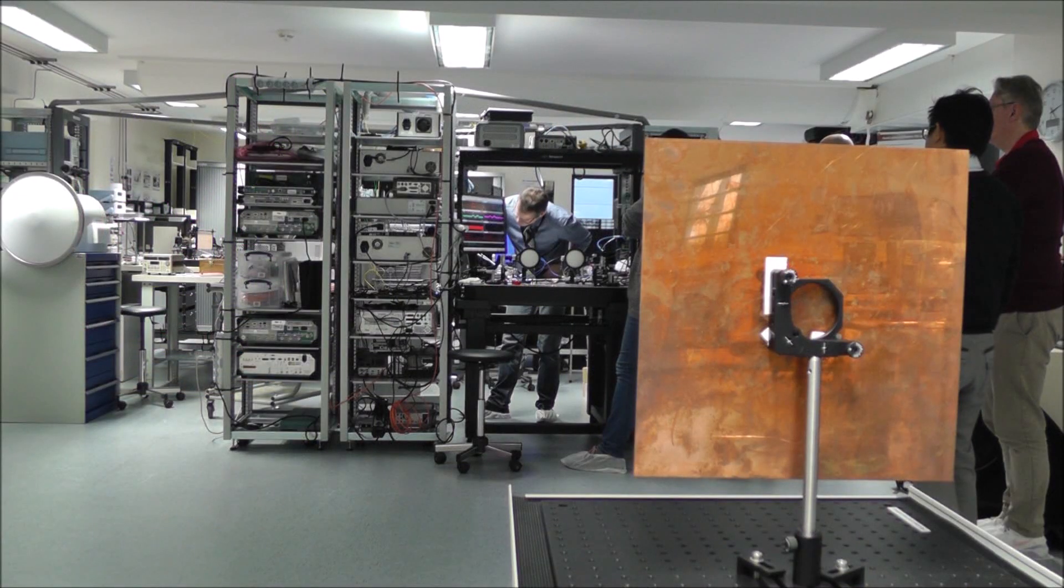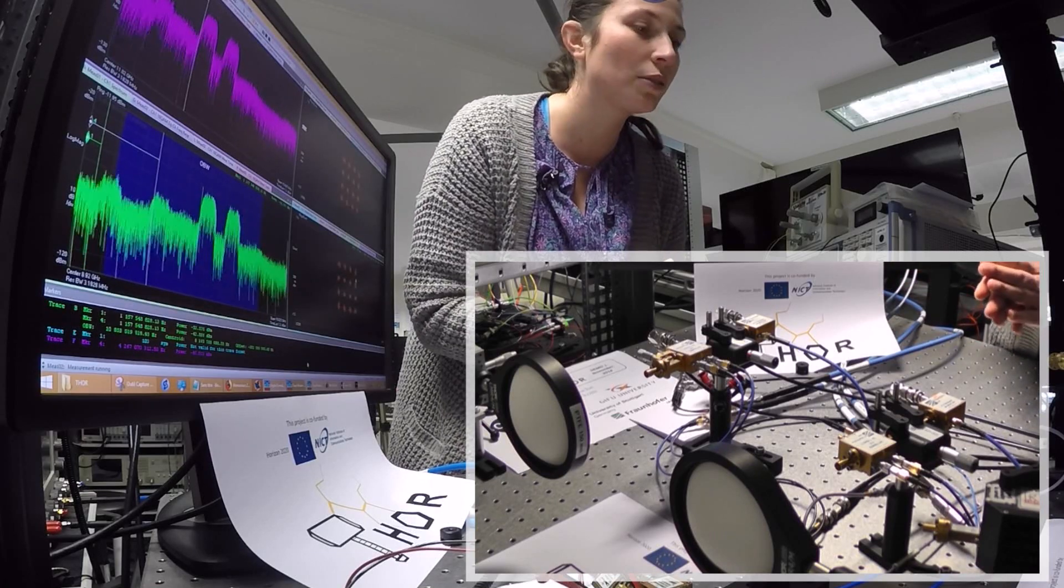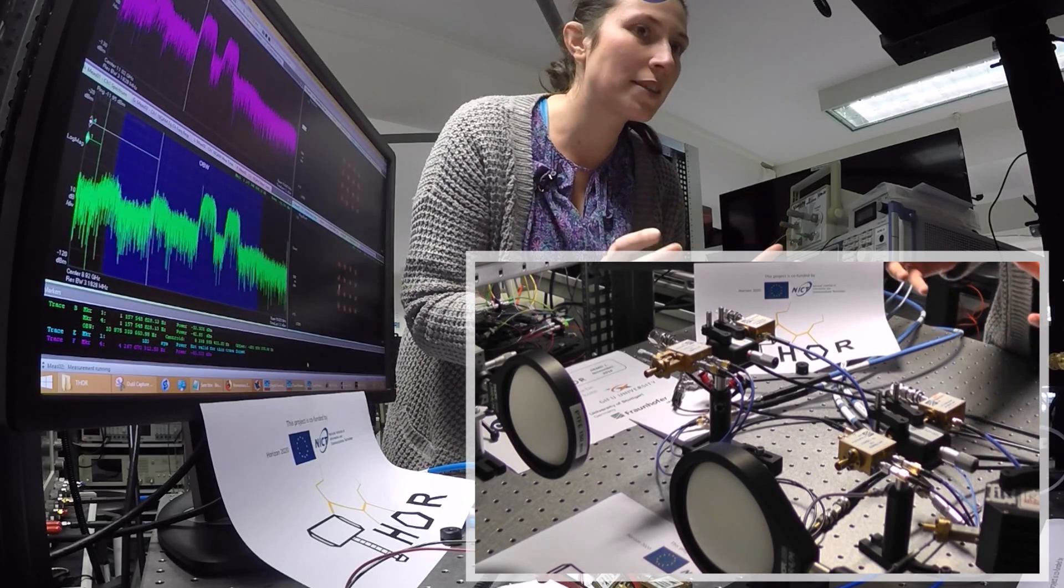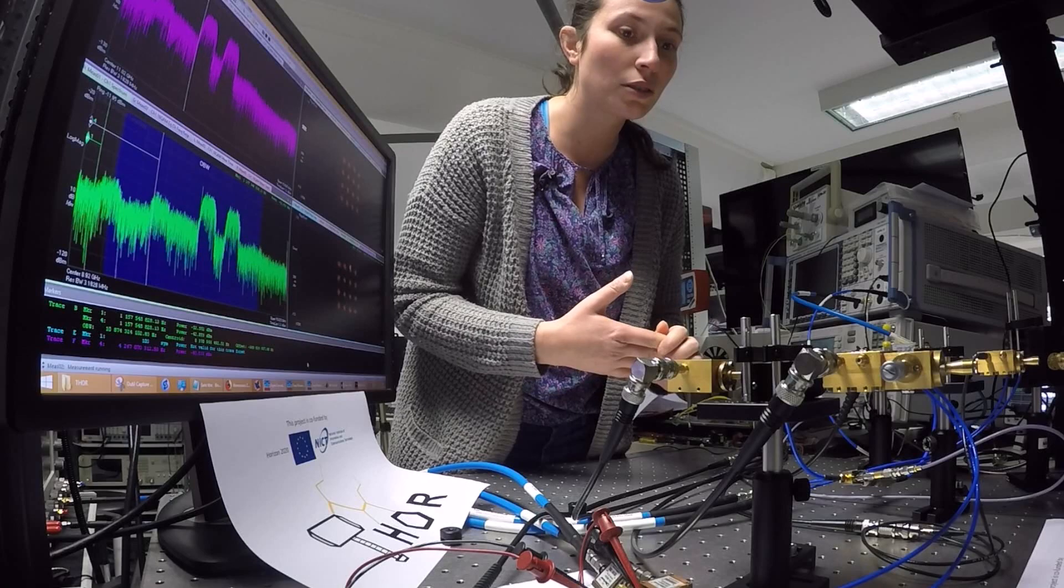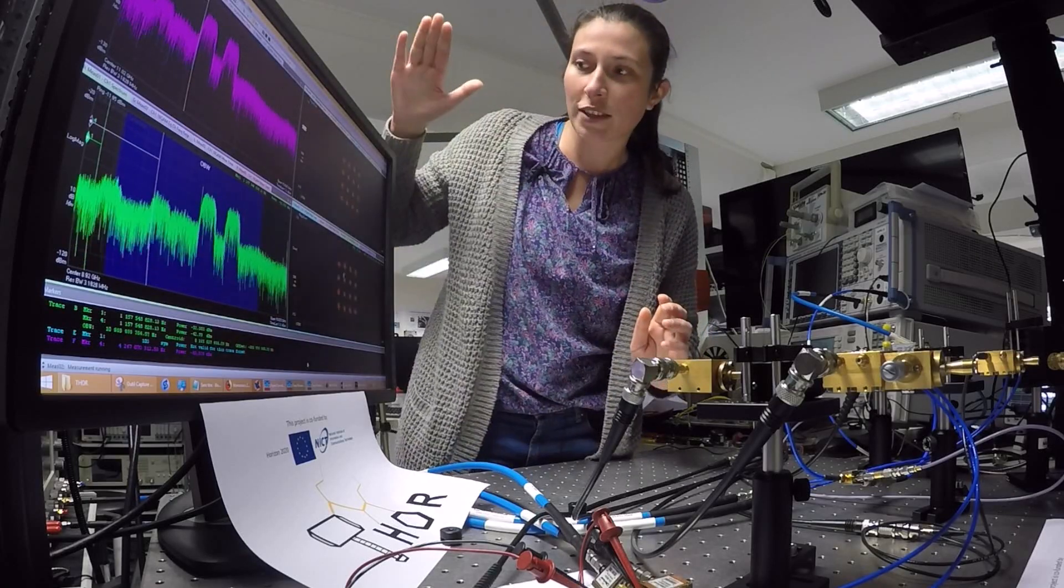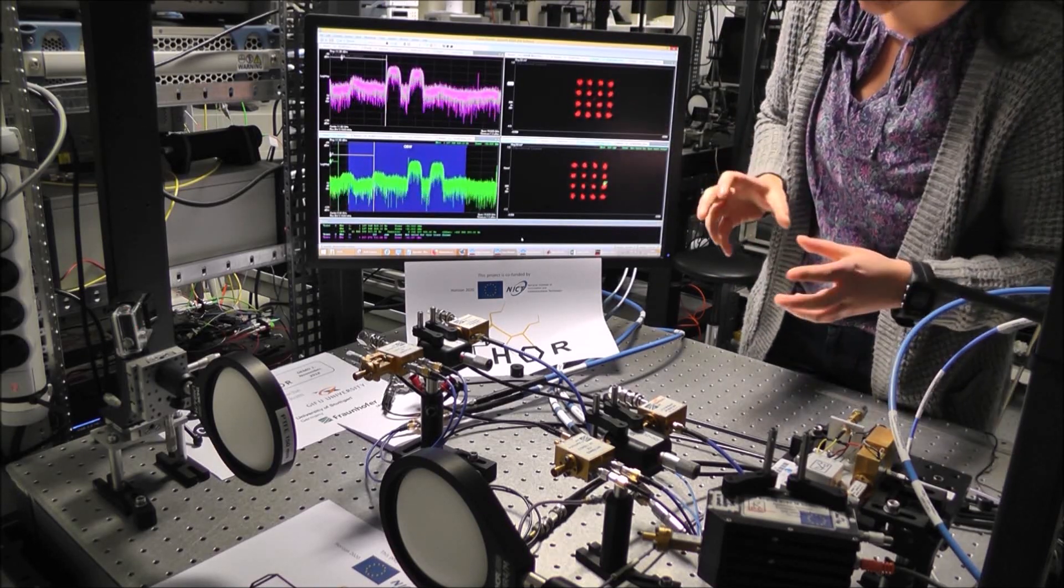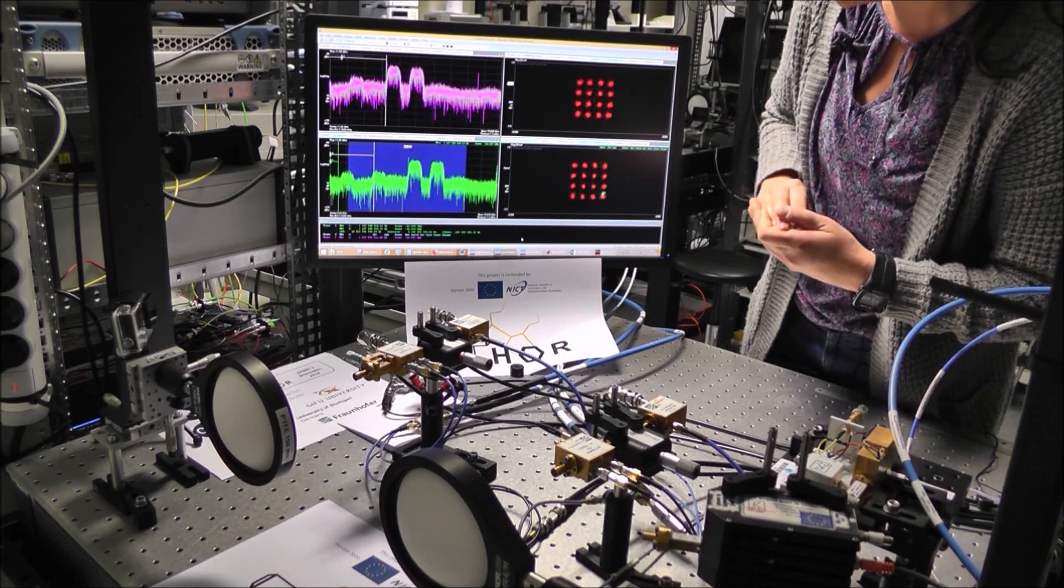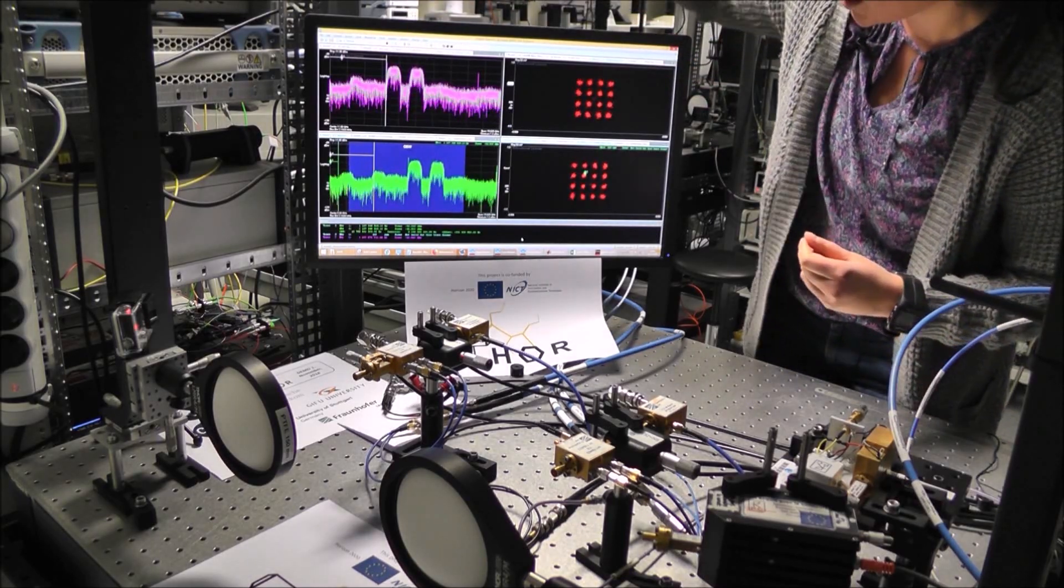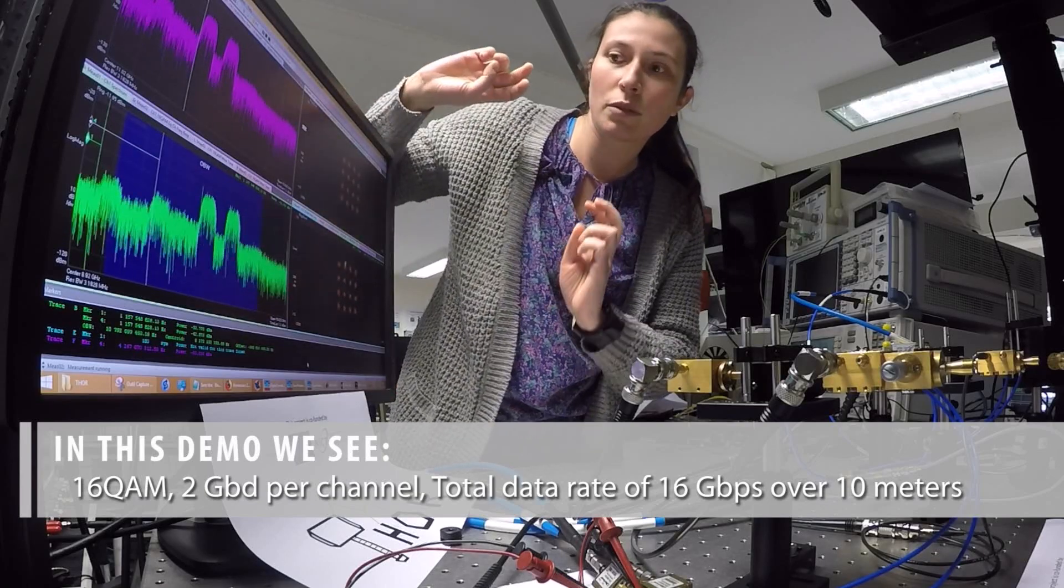Right now we are transmitting the signals over a distance of about 10 meters using horn antennas which have a gain of around 22 dBi. So they are quite directive and some lenses. We are processing the signal we are getting with a very fast oscilloscope. And you can see here on the screen is the analyzer software. And right now we are sending on a physical channel two signals. You can see the spectrum here and the two constellation diagrams. So we are now transmitting 16 QAM on both channels.